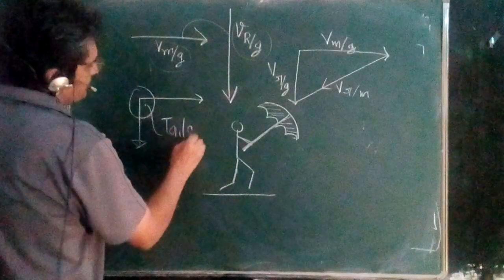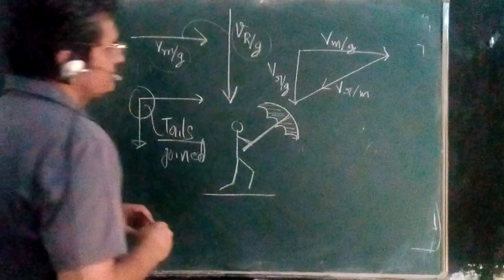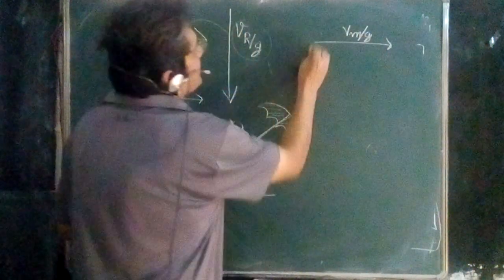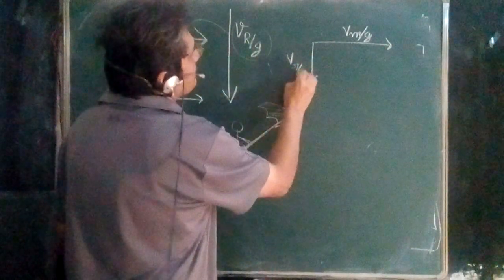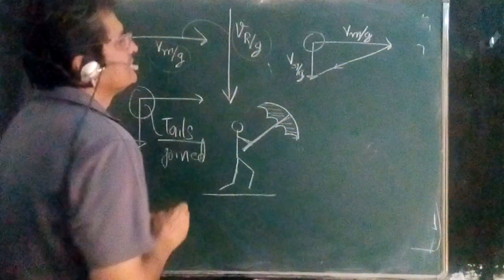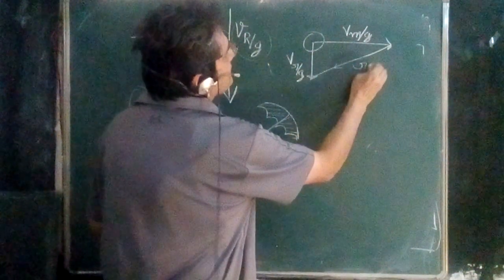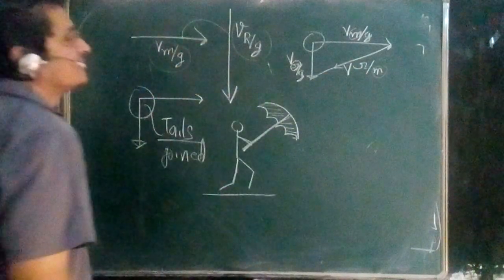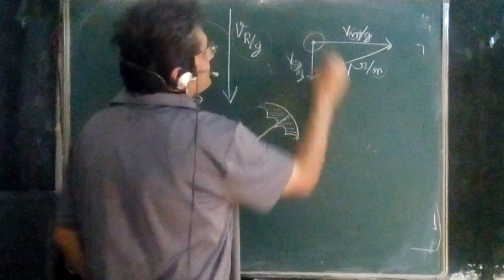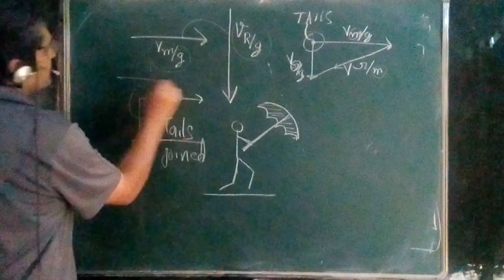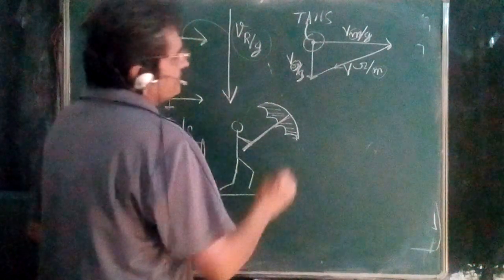When the vectors are independent of each other and are with respect to a given frame, always join the tails of those vectors — this is very important. So I draw the velocity of man with respect to ground and the velocity of rain with respect to ground, and I join their tails. If you draw the arrow from man's tail to the tip of rain's vector, this gives the velocity of rain with respect to man. Do not join heads or head-to-tail for independent vectors — you will get a wrong result.